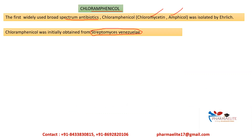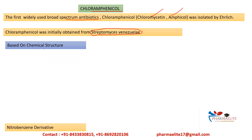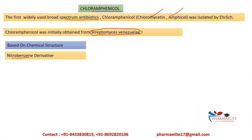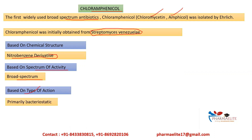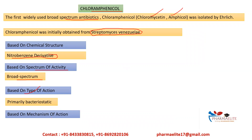Now we'll see the classification of chloramphenicol based on different aspects. First, based on chemical structure, it belongs to the nitrobenzene derivatives. Based on spectrum of activity, it has broad spectrum activity. Based on type of action, it is primarily bacteriostatic, meaning it inhibits the growth of bacteria. Based on mechanism of action, it inhibits protein synthesis.